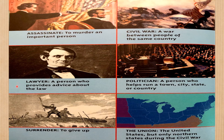Glossary. Lawyer: a person who provides advice about the law. Surrender: to give up. Civil War: a war between people of the same country. Politician: a person who helps run a town, city, state, or country. The Union: the United States, but only the northern states during the Civil War.